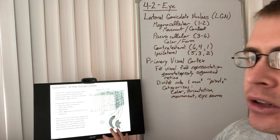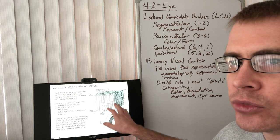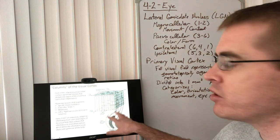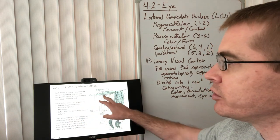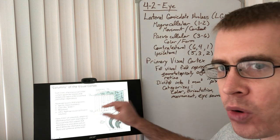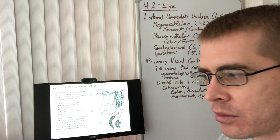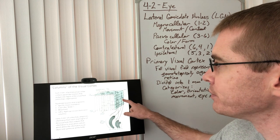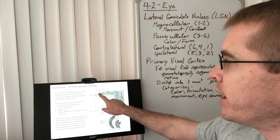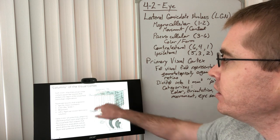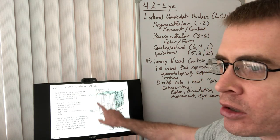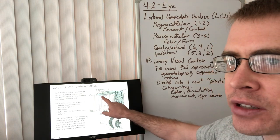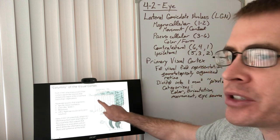The LGN is sending information about color, movement, contrast, and motion to specific one millimeter cubed portions of the primary occipital cortex, into layer four. There are different columns within this one millimeter cubed region, and these different columns process information about different orientations of lines. These are called orientation columns.